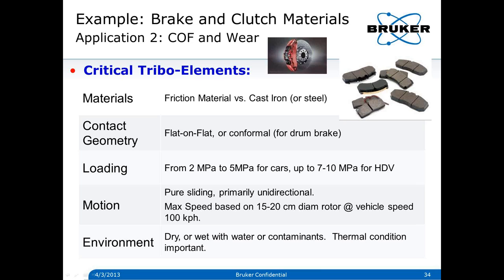The motion is purely sliding, primarily unidirectional. I'm basing maximum speed on a 15 to 20 centimeter diameter rotor at a vehicle speed of 100 kilometers per hour — about 60 miles per hour. The environment is dry or wet, and thermal condition is important to control or monitor. When running brake fade and recovery tests, you run a stop, it gets to some high temperature, then you wait until it cools to 38 degrees C (100°F — the initial brake temperature or IBT) before starting the next stop. You might do 100 such stops and compare friction and wear before and after.